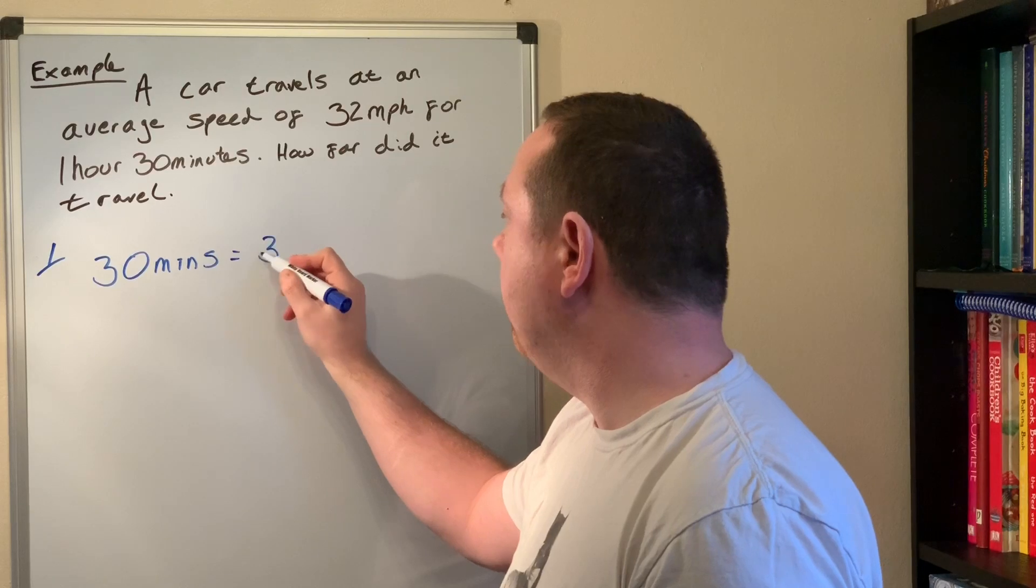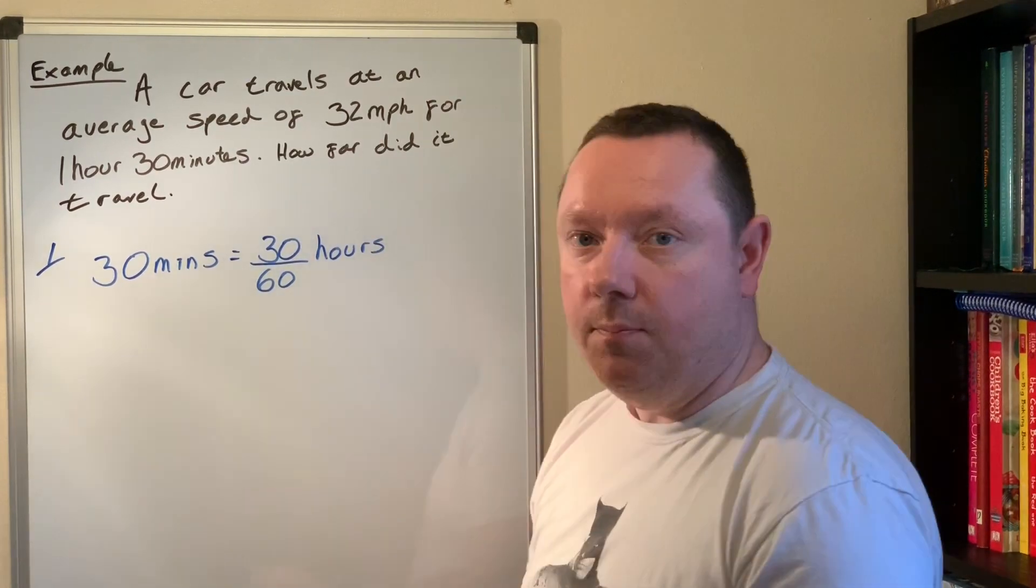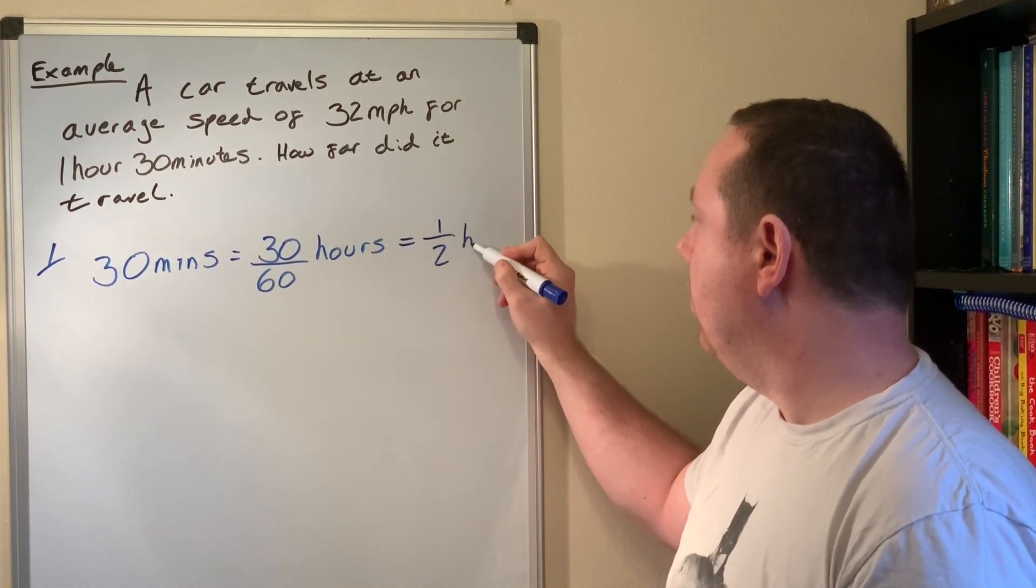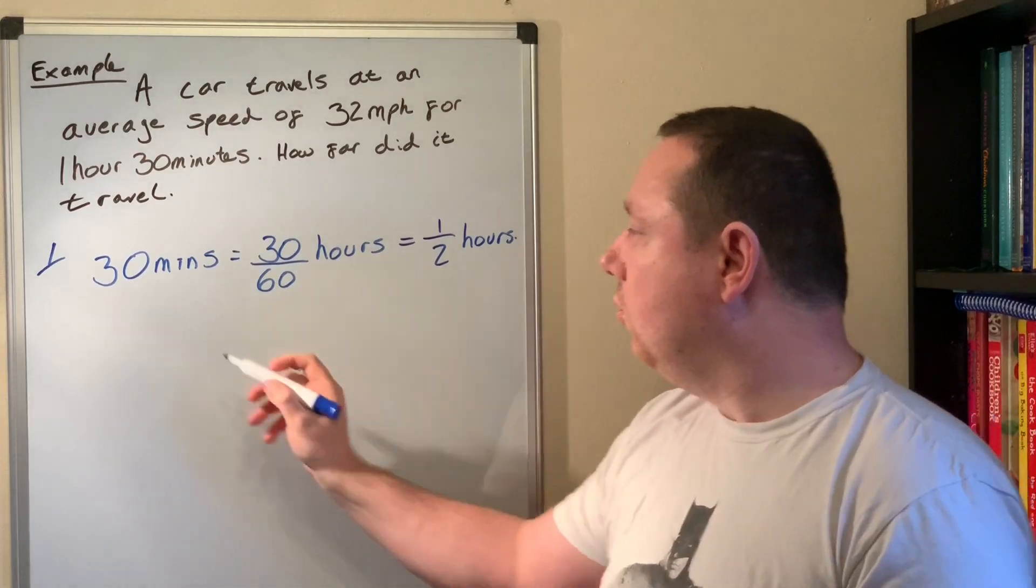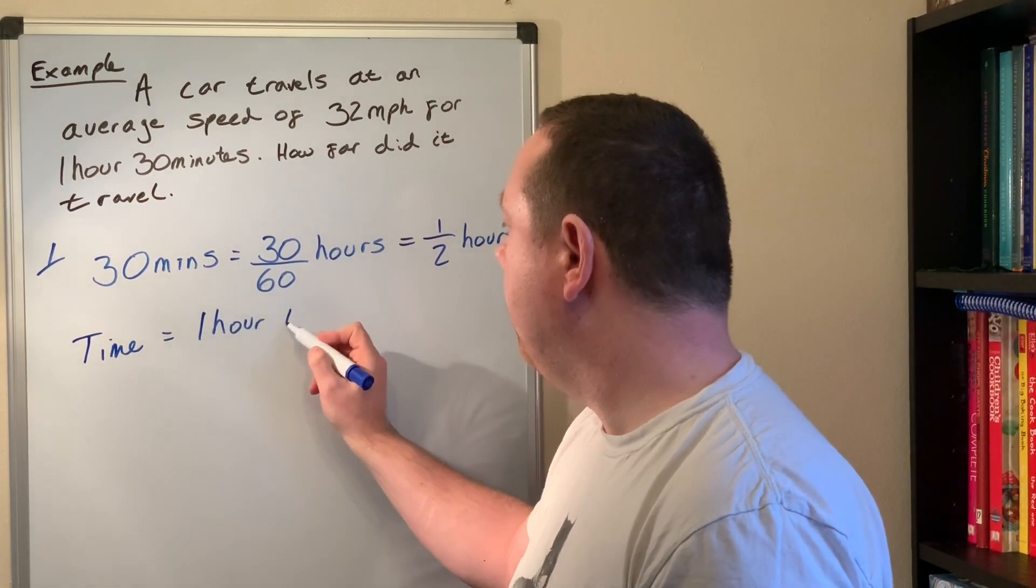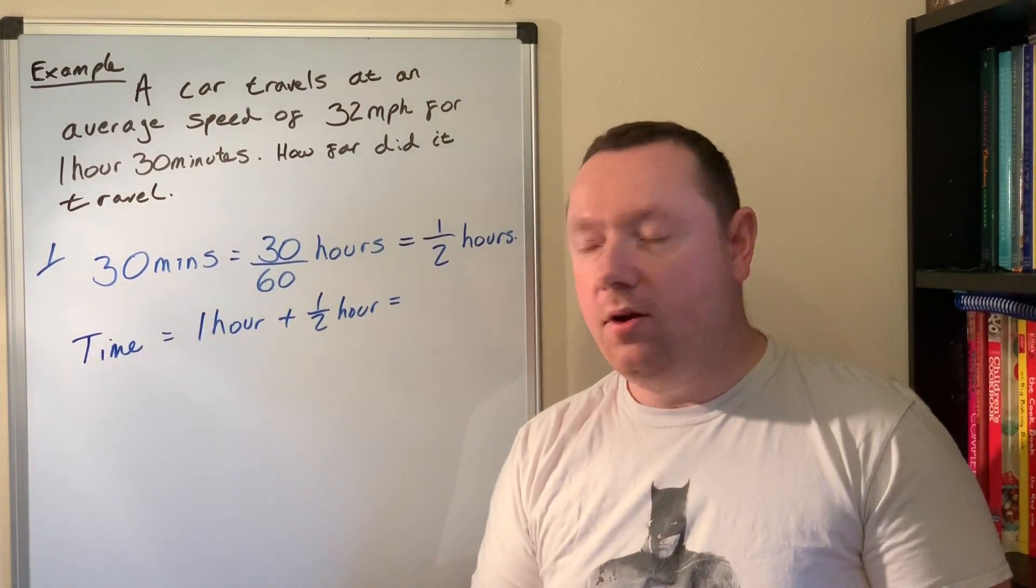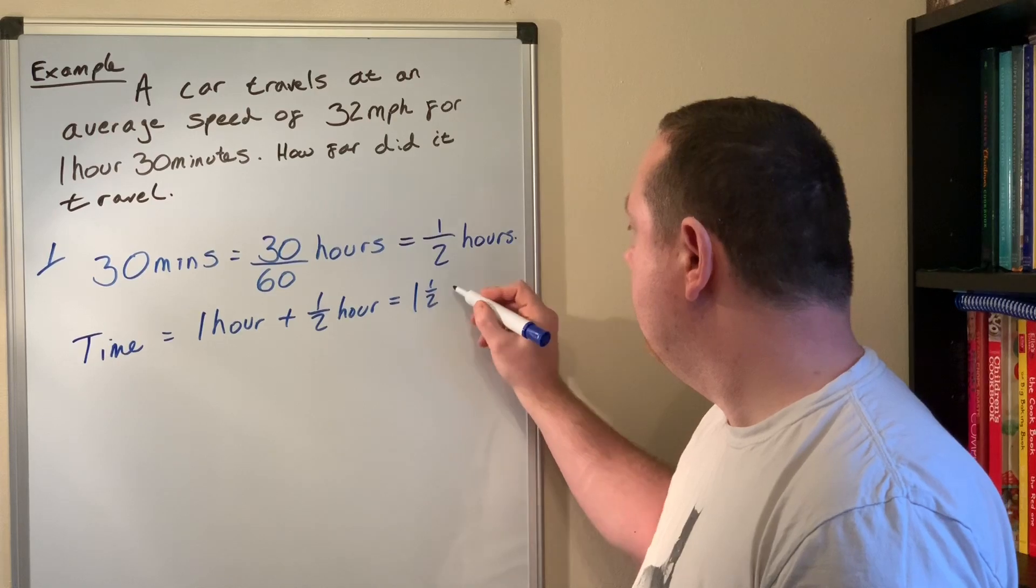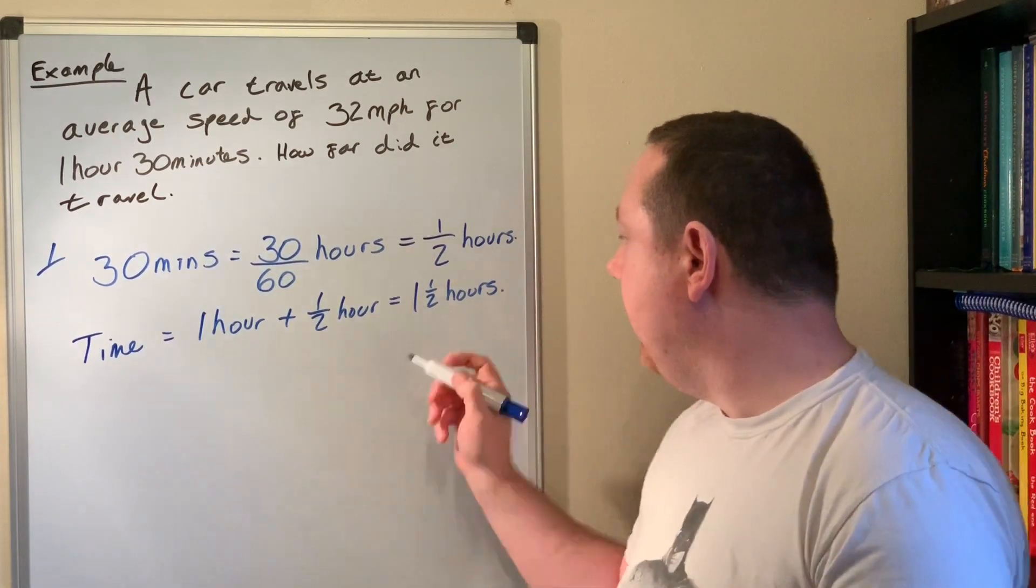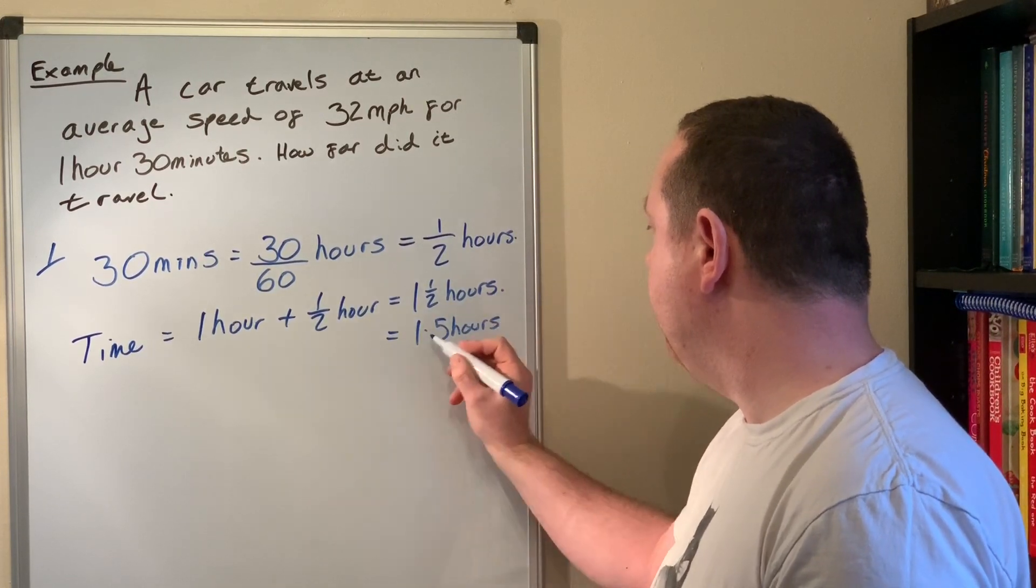Well that's 30 out of 60 hours, which we can simplify quite easily by dividing by 30 on top and bottom to get 1 out of 2, a half hour. So our total time is going to be one hour plus a half hour. Well that's one and a half hours, which for this video I'm going to change to 1.5 hours because a half is 0.5.